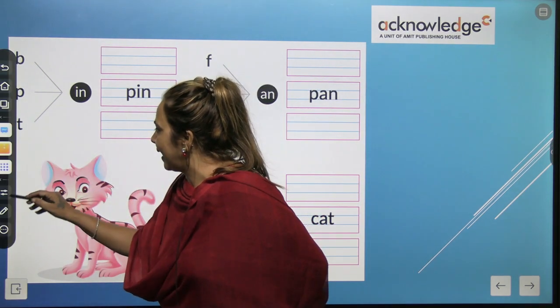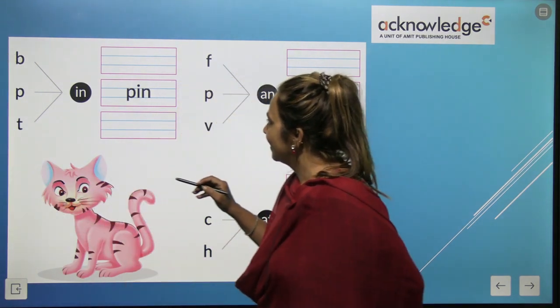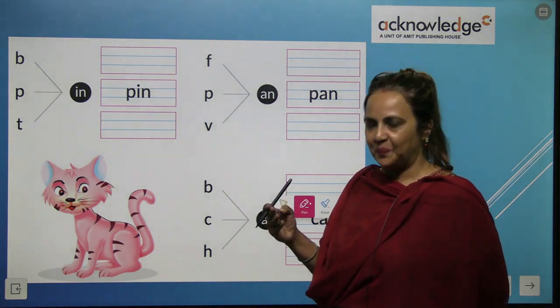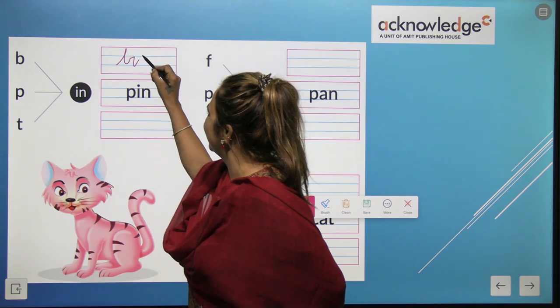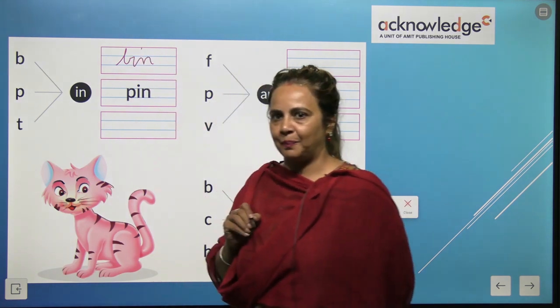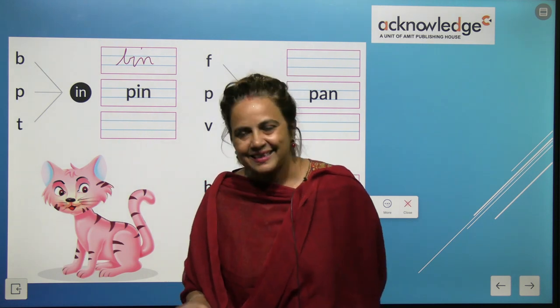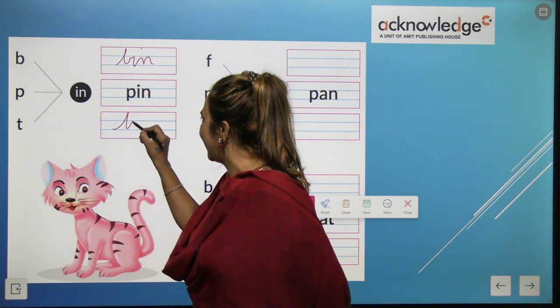B, I, N. B, I, N. Bin. Yes, B, I, N, bin. P, I, N, pin. And what is next? You're going to tell me? Yes, it's T, I, N, tin.